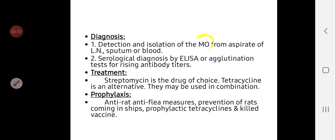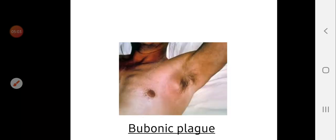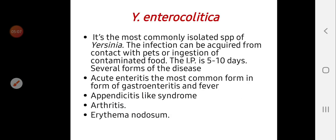Diagnosis is by detection and isolation of the microorganism from aspiration, sputum, or blood, and serological diagnosis by ELISA. Treatment is by streptomycin, tetracycline, or a combination of both. Prophylaxis involves anti-rat and anti-flea measures, prevention of rats entering ships, prophylactic treatment by tetracycline, and a killed vaccine. Plague is very rare in the world but a few cases still occur.